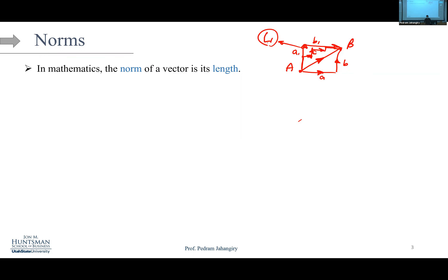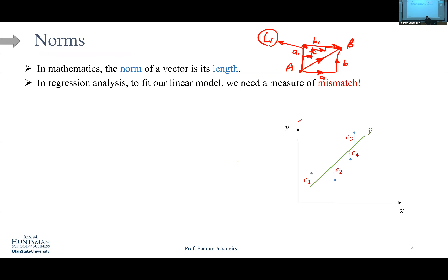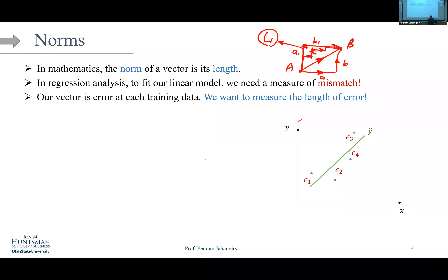The idea of a norm is to calculate the length of a vector. In regression analysis, this vector is the vector of our errors — the measure of mismatch. This is my y versus y-hat, also called epsilon or residuals. Whenever you compute a regression line, you need to calculate the length of these errors.